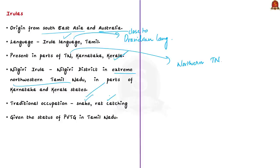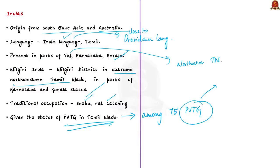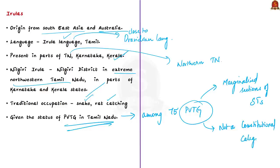The traditional occupation of Irulas is snake catching and rat catching, but due to depletion of forests they are increasingly becoming agricultural laborers. They are considered Scheduled Tribes, and Irulas are among the 75 Particularly Vulnerable Tribal Groups (PVTGs), but they have been given PVTG status in Tamil Nadu only, not in Kerala or Karnataka. PVTGs are the marginalized section of Scheduled Tribes — relatively isolated, educationally and socio-economically backward, living far from amenities. PVTG is not a constitutional category but the Government of India's classification created to enable improvement in conditions of communities with particularly low development.